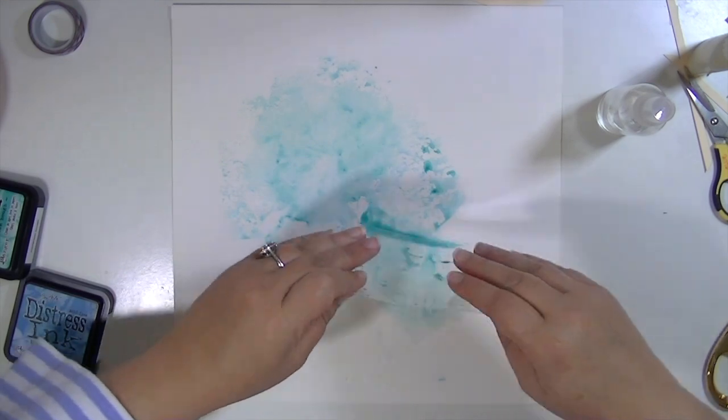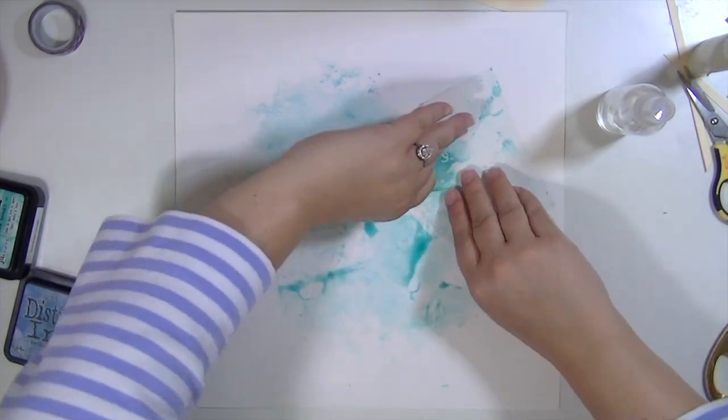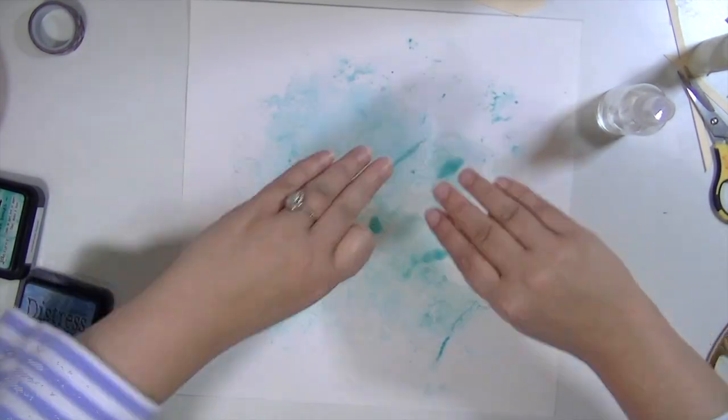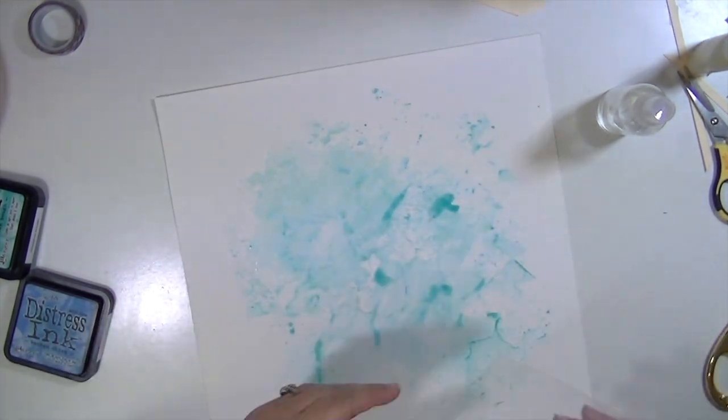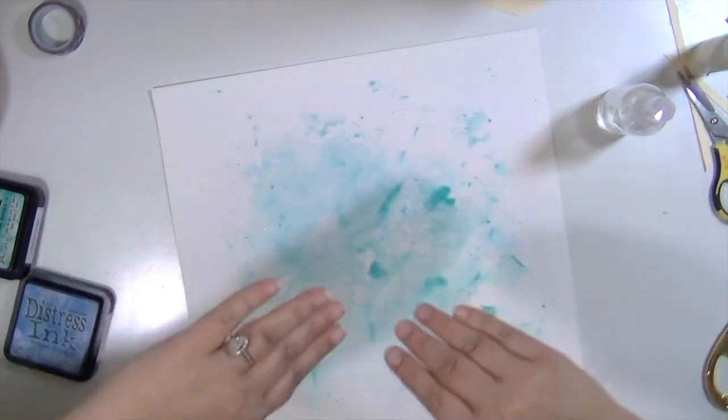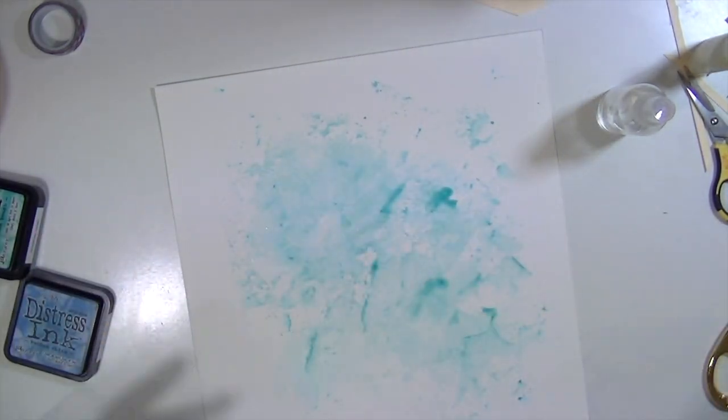In hindsight I would have used a bigger piece of packaging because you can see that sometimes it leaves a straight line, so I have to keep going over it to make sure I don't get that straight line mark. When you watercolor you don't end up with a straight line.